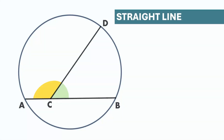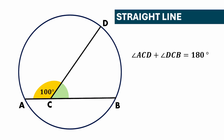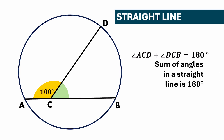First let's discuss the straight line property. In this case, angle ACD is equal to 100 degrees and we need to find angle DCB. Angle ACD plus angle DCB will be equal to 180 degrees, because the sum of angles in a straight line is 180 degrees. Therefore angle DCB is equal to 180 minus 100, which equals 80 degrees.